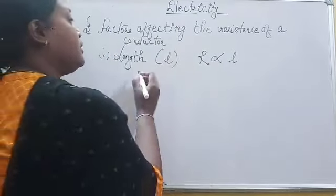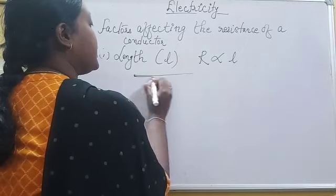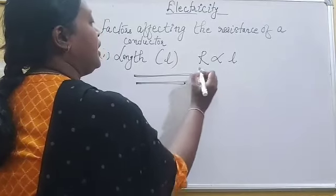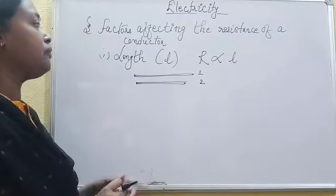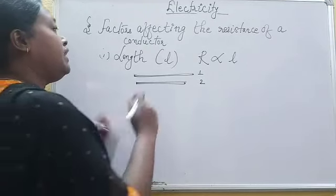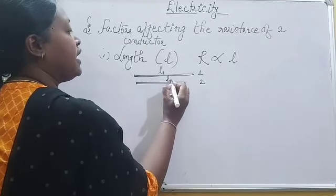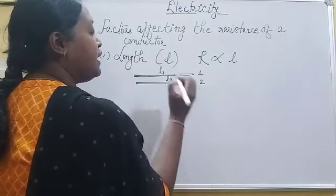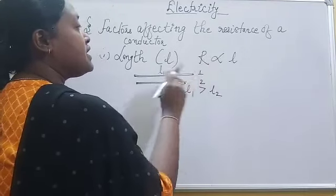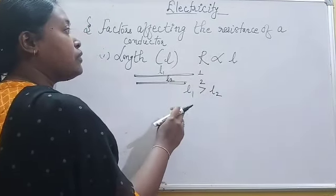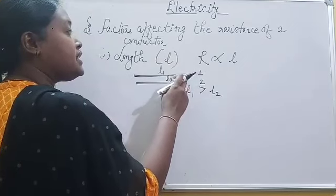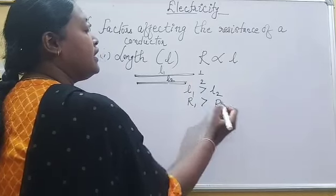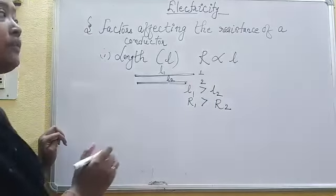Suppose you are given two wires of the same area of cross-section but of different lengths. Here is wire 1 and this is wire 2. The first wire has length L1 and the second wire has length L2. From the figure, you can easily understand that L1 is greater than L2. According to this, since resistance is directly proportional to length, the resistance of the first wire — the longer wire — will be greater than that of the second wire, whose length is shorter.